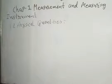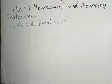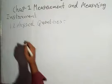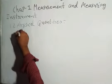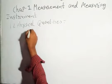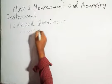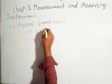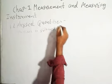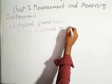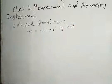For example, length is 10 meter. In '10 meter', a number followed by a unit is called a physical quantity. So the definition is: a number followed by a unit is called a physical quantity.